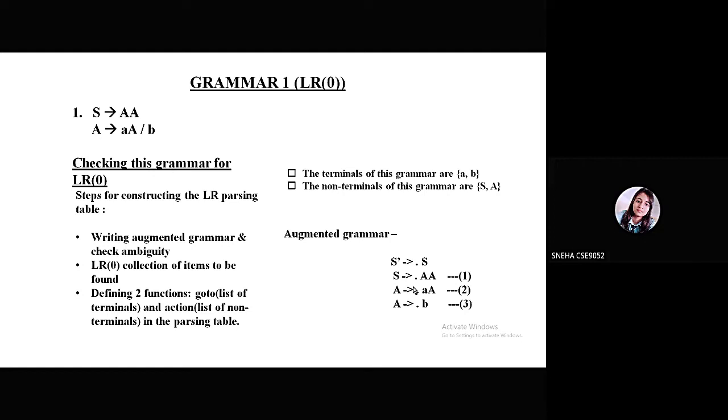To make these productions into LR0 items, dots have been added to the right side of the production. These dots help indicate how much of the input has been scanned up to a given point in the process of parsing. This is a context-free grammar and there is no ambiguity, so we can move to the construction of canonical items.